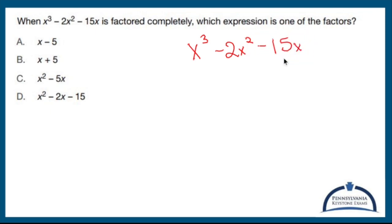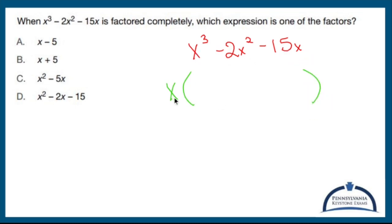They mentioned factored completely. The first way that you factor things is to look at every single term and try to bring out a greatest common factor. Do you have something in common with all three of these? And the answer is yes — an x is in common in all three of them. So you bring out an x. When you factor out the greatest common factor, you divide that factor from the remaining terms, and when you divide an x from all of these, you subtract the exponents.